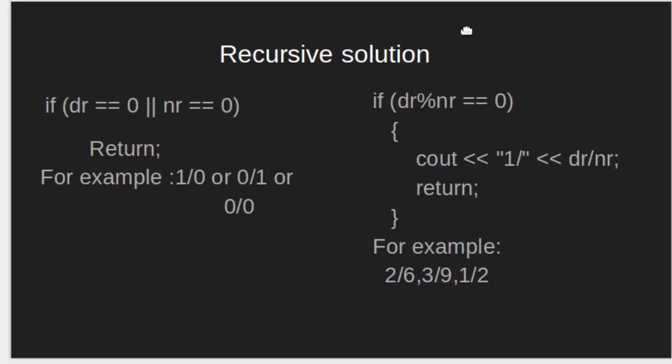Now, this is checking whether denominator is divisible by numerator or not. If divisible, then printing 1 by dr by nr. For example, 2 by 6, so 1 by 3 will be printed and returned. 3 by 9, 1 by 3 will be printed and returned. For 1 by 2, 1 by 2 will be printed and returned.